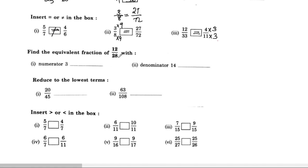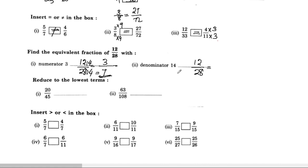Find the equivalent fraction of 12 by 28 with numerator 3. We divide 12 by 4 to get 3, so we also divide 28 by 4 to get 7. Therefore 12 by 28 is equal to 3 by 7. Also, for an equivalent fraction with denominator 14: 28 divided by 14 is 2, so 12 divided by 2 is 6, giving 6 by 14.